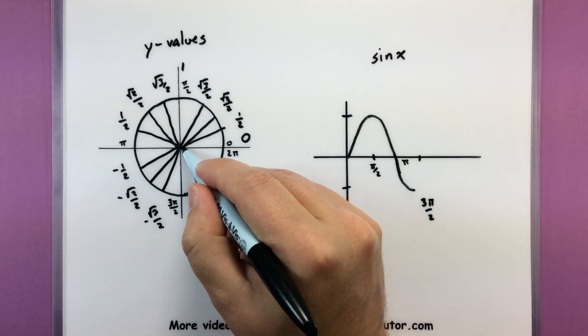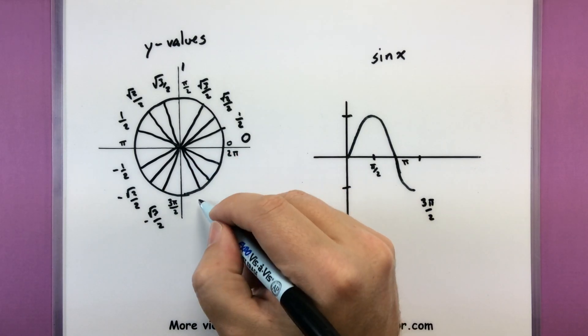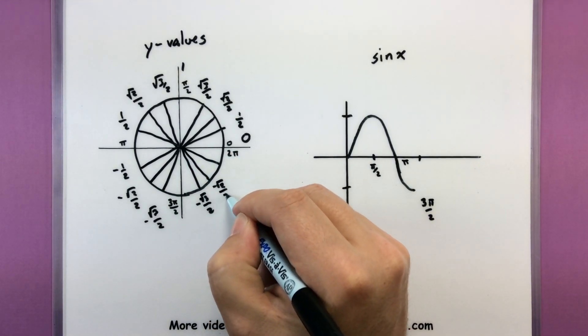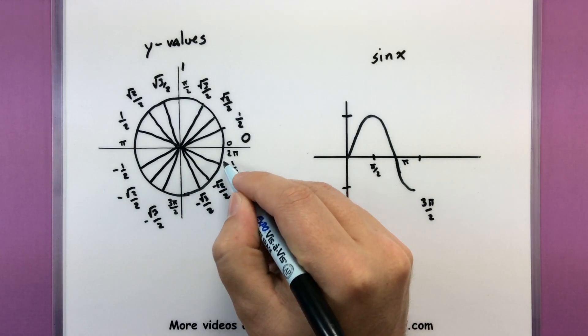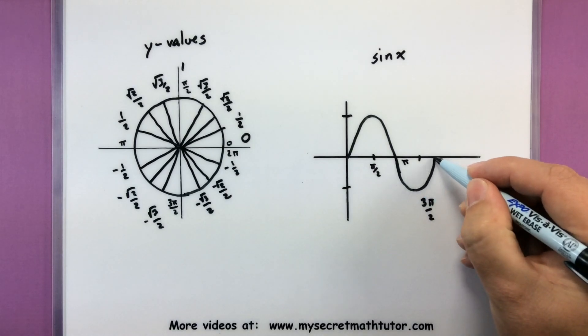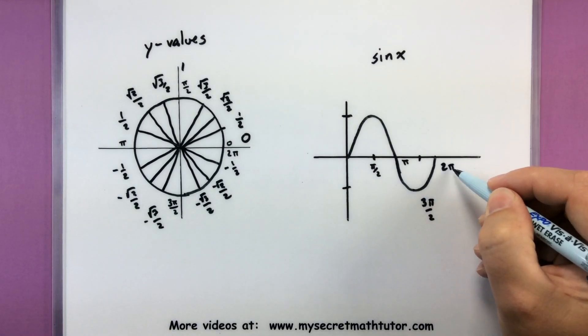And then from there, we would imagine going back up, still in the negatives. But negative square root of 3 over 2, negative root 2 over 2, negative 1 half. And eventually returning back at 0, when we reach that angle of 0. So back up at 2 pi.